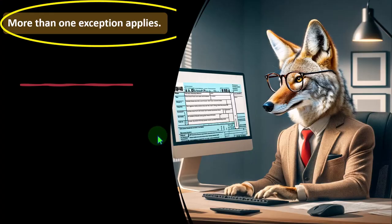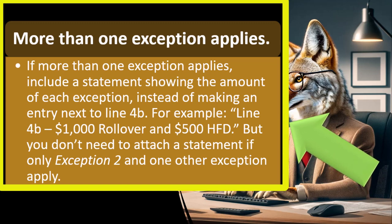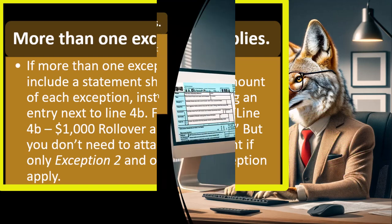If more than one exception applies, include a statement showing the amount of each exception. You have these exceptions that exclude distributions from income, but if more than one applies, you have to tell the IRS in a statement attached to the tax return. For example: 'line 4B: $1,000 rollover and $500 HFD.' You don't need to attach a statement if only exception two and one other exception apply.